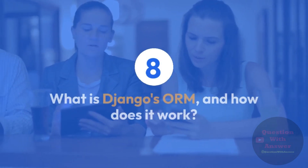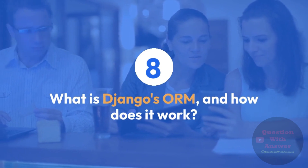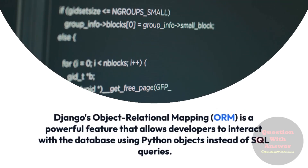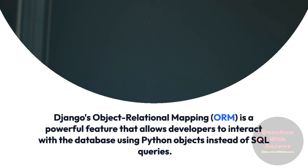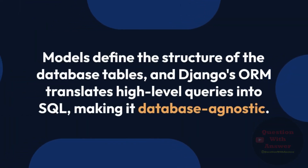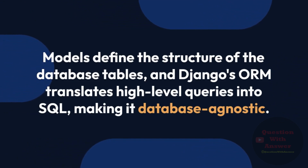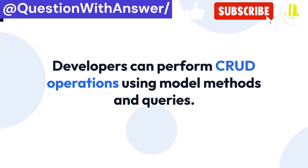Question 8: What is Django's ORM, and how does it work? Answer: Django's object-relational mapping or ORM is a powerful feature that allows developers to interact with the database using Python objects instead of SQL queries. Models define the structure of the database tables, and Django's ORM translates high-level queries into SQL, making it database-agnostic. Developers can perform CRUD operations using model methods and queries.